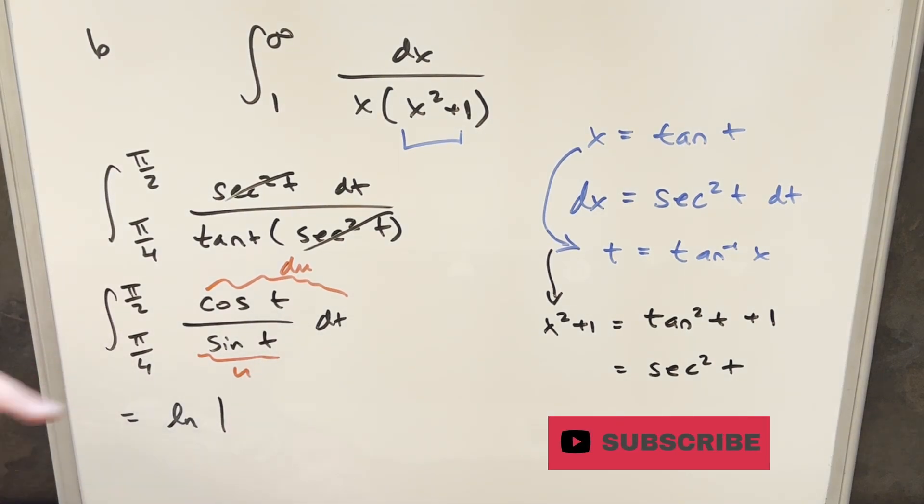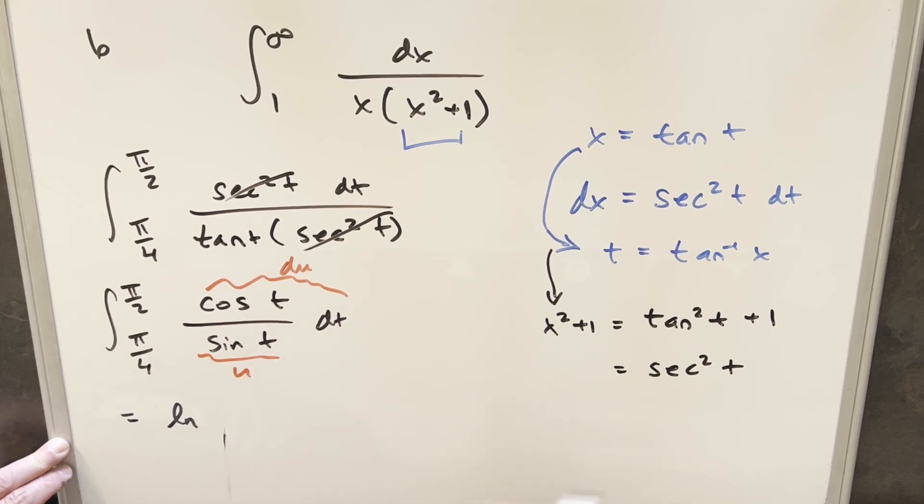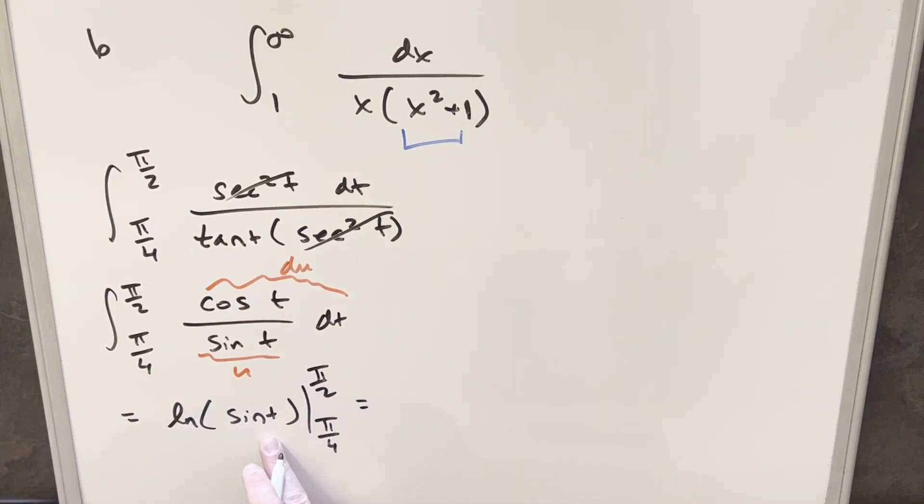But sine is always positive here, so let's drop the absolute value and just evaluate from pi over 4 to pi over 2. Evaluating at pi over 2, sine pi over 2 is going to be 1. So we have just natural log of 1 there. Sine at pi over 4, that's going to be square root of 2. So we're going to have natural log 1 over square root of 2.